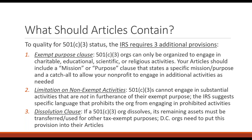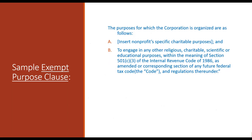DC organizations need to write the dissolution limitation into their articles. Here is a sample of what that purpose clause might look like: 'The purposes for which this corporation is organized are as follows' — then you list a specific purpose, like 'we are an association of DC cat lovers who will advocate for cat welfare and help people adopt cats.' Then you include a catchall saying you can also engage in other activities consistent with 501(c)(3) requirements for religious, charitable, scientific, or educational purposes. That catchall gives flexibility to expand your mission as you grow.